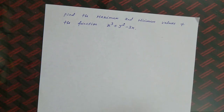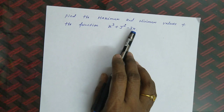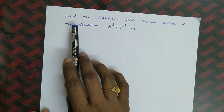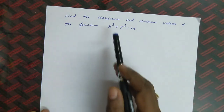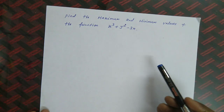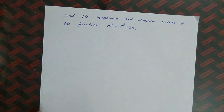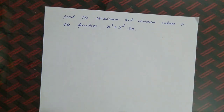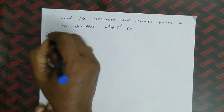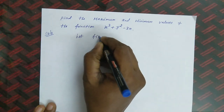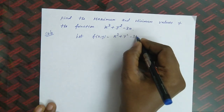Look at the first question: Find the maximum and minimum values of the function x³ + y² − 3x. The same question can also be asked as: 'Examine the extreme values of the function' — extreme values means maximum and minimum values. Let f(x, y) = x³ + y² − 3x.